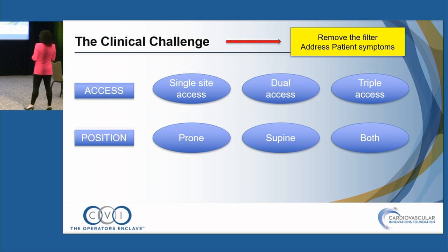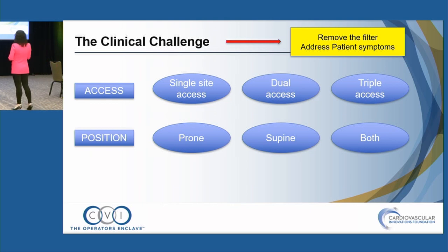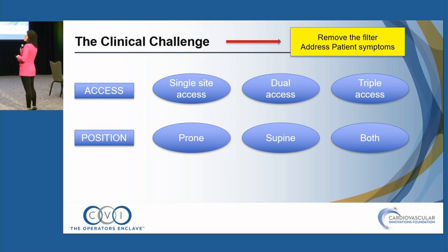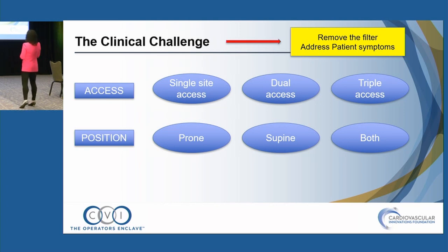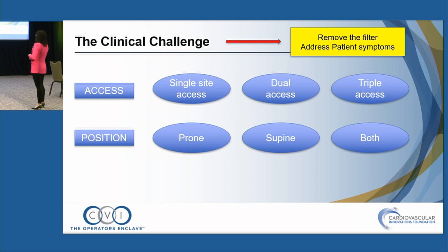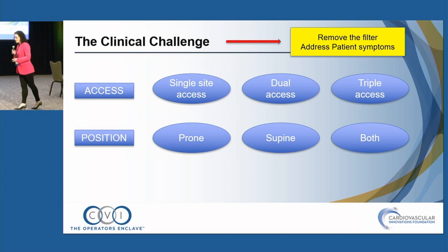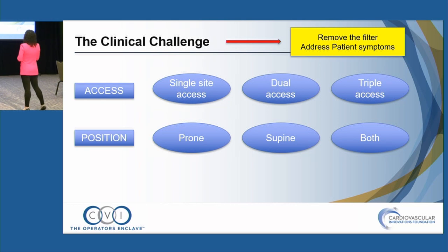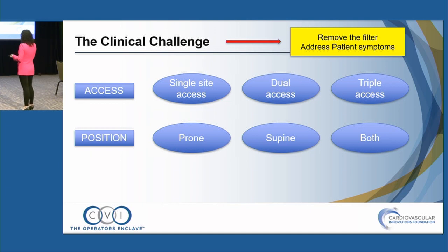From an access standpoint, single access is not going to help you get this reconstruction done. You might be able to do it with dual access, but you still have to remove the filter. These are always three-point access cases: coming from below for ultimate reconstruction, and then from the jugular for filter retrieval. For positioning — prone versus supine versus both, meaning you flip from one to the other. It's hard to do these prone, especially working in the neck with a challenging filter case — it's really uncomfortable and comes with respiratory problems for the patient. In very heavy, edematous, thick legs, it's hard to get access from a supine approach. So when I know it's going to be challenging, I put them prone first.